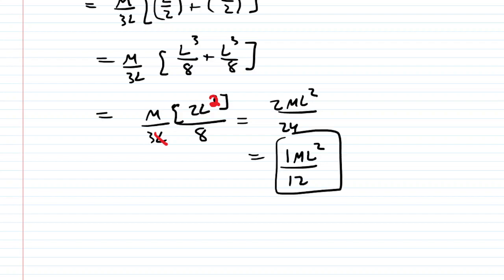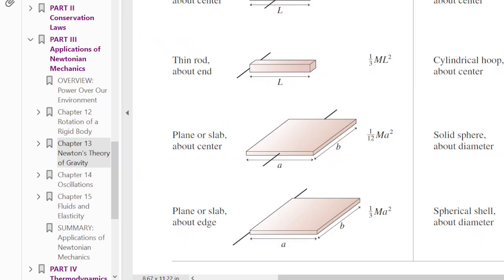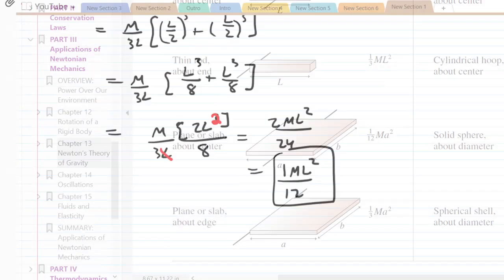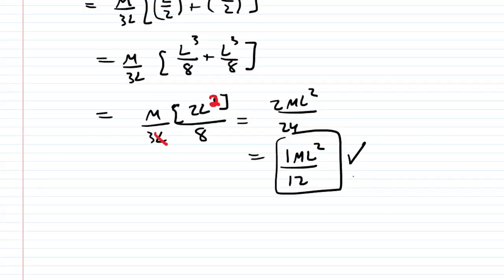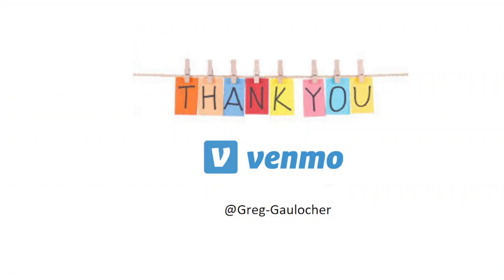And that does match what the table gave us as 1 twelfth ml squared for when the axis passes through the center of that thin rod. So that indeed also checks out. Thanks for taking the time to watch the video. If you're interested in making a small donation to my cause, I'd greatly appreciate it. But of course, please don't feel obligated to do so.